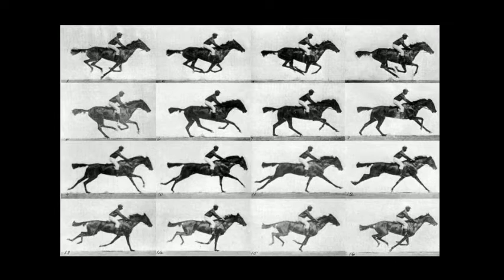He got 16 pictures all in sequence at equal intervals, showing the motion of the horse's legs frame by frame. When the horse's legs are tucked under him, all four legs are off the ground — but that's the only time. When the horse's legs are extended forward or behind him, there's always at least one leg on the ground.